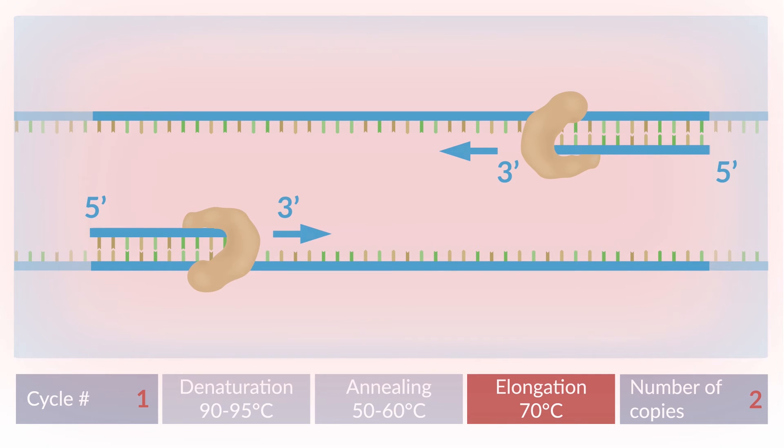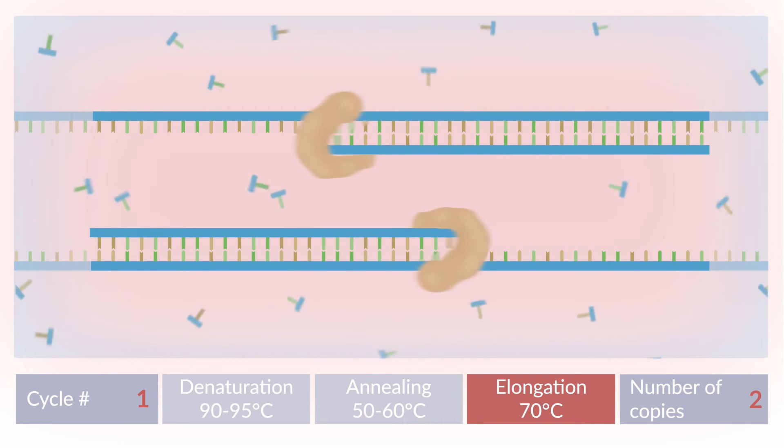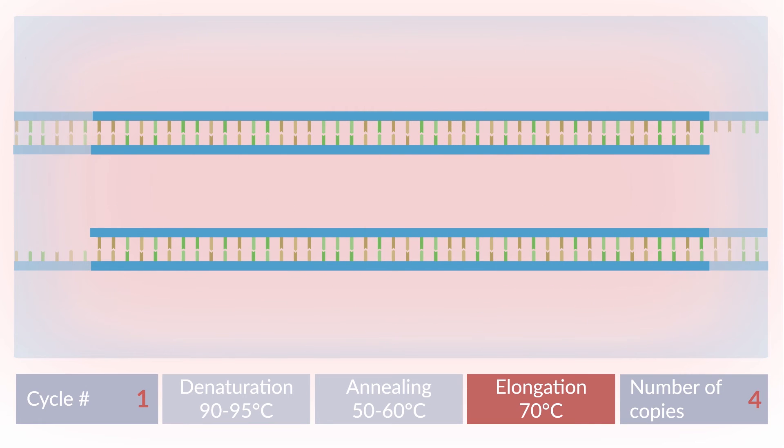Each attached nucleotide thereby serves as the attachment point for the next complementary nucleotide. In the first amplification cycle, two long DNA strands are obtained, which exceed the desired target on one side. The DNA fragment to be amplified is now present in two double strands and therefore duplicated.